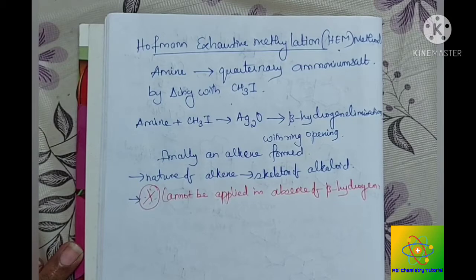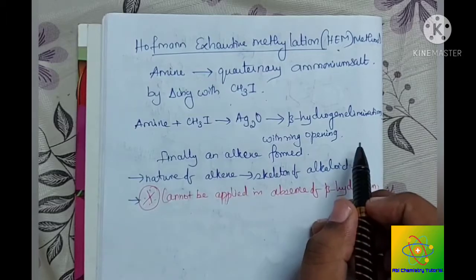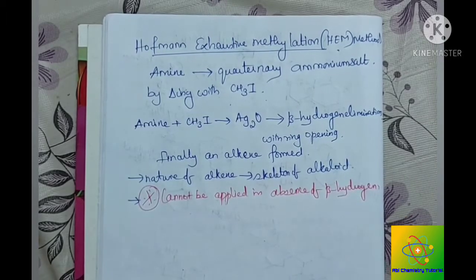To start with, I will tell you the simple explanation. Simply, a Hofmann exhaustive methylation can be defined as the conversion of an amine into a quaternary ammonium salt by adding methyl iodide and finally with some eliminations of beta hydrogen, we'll get an alkene. From the structure of the skeleton of that alkene, we'll get the skeleton of the alkaloid.